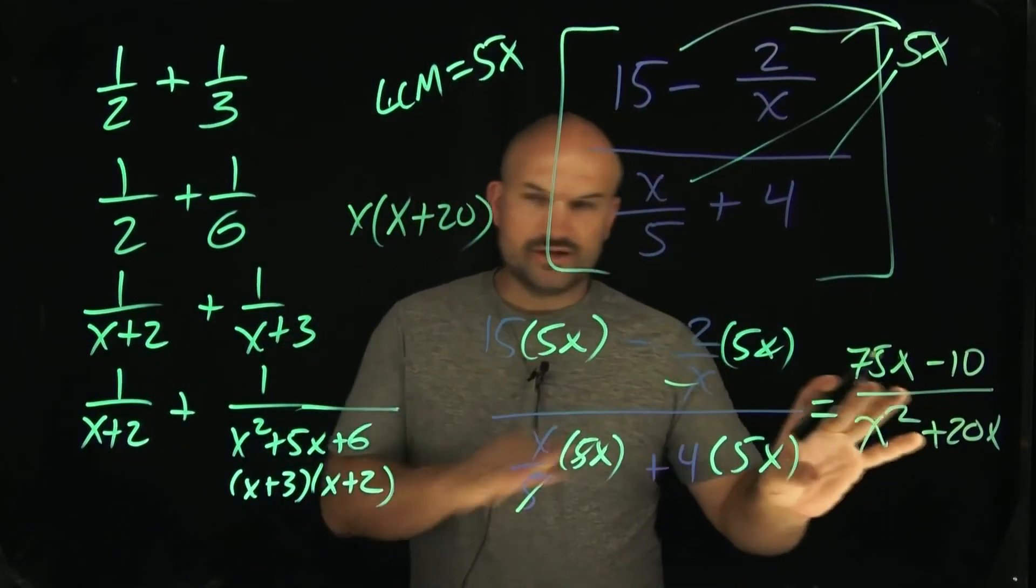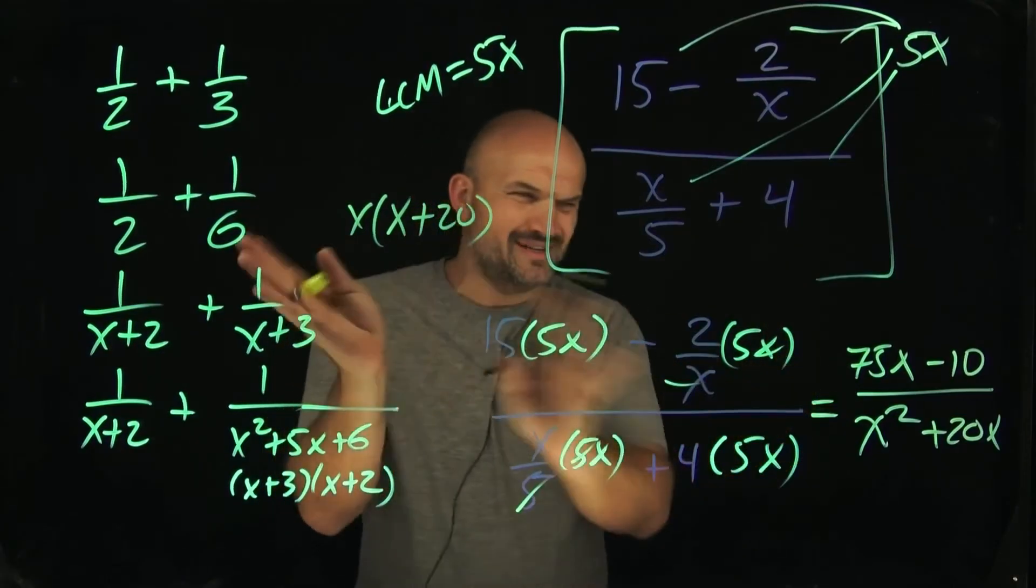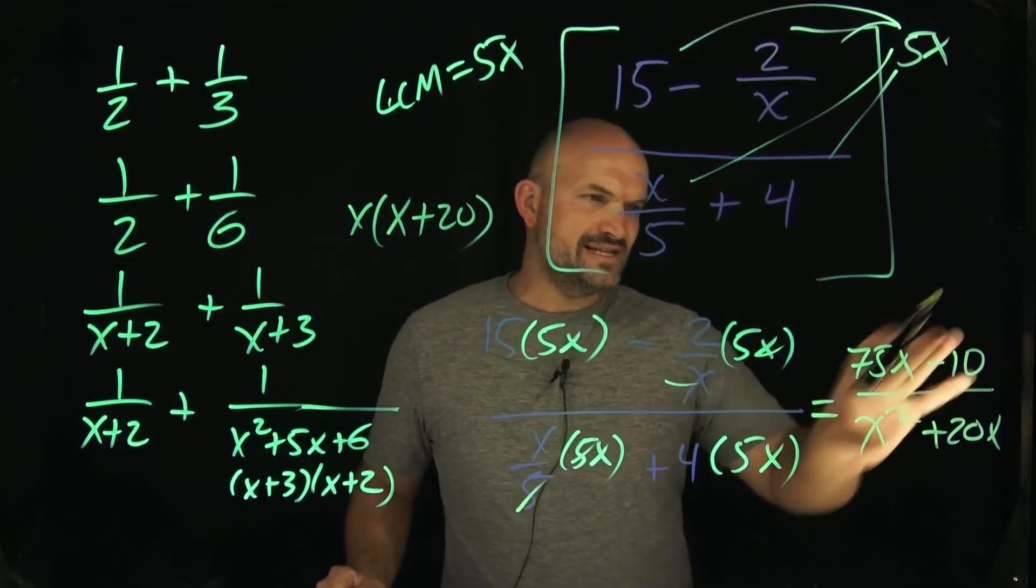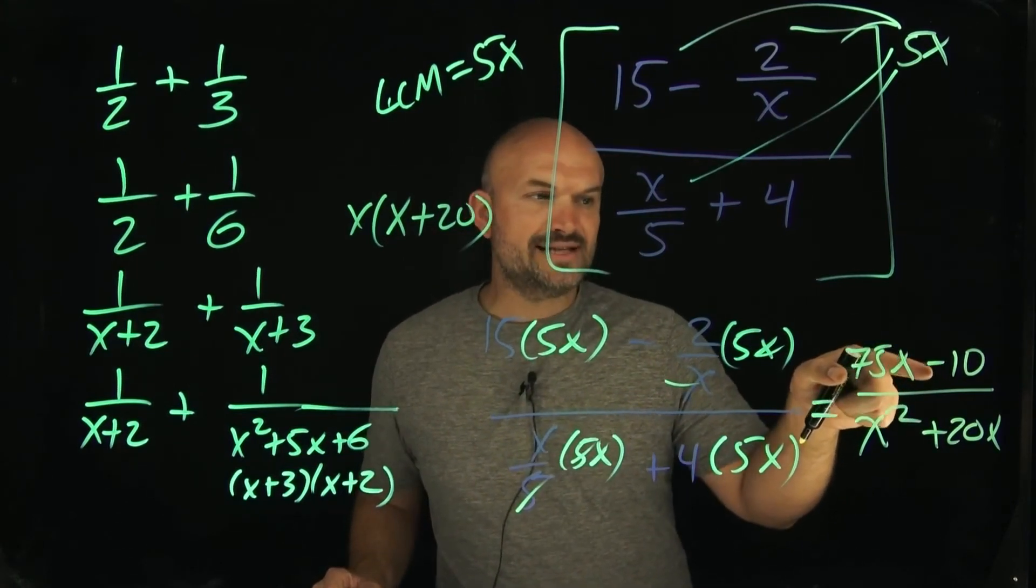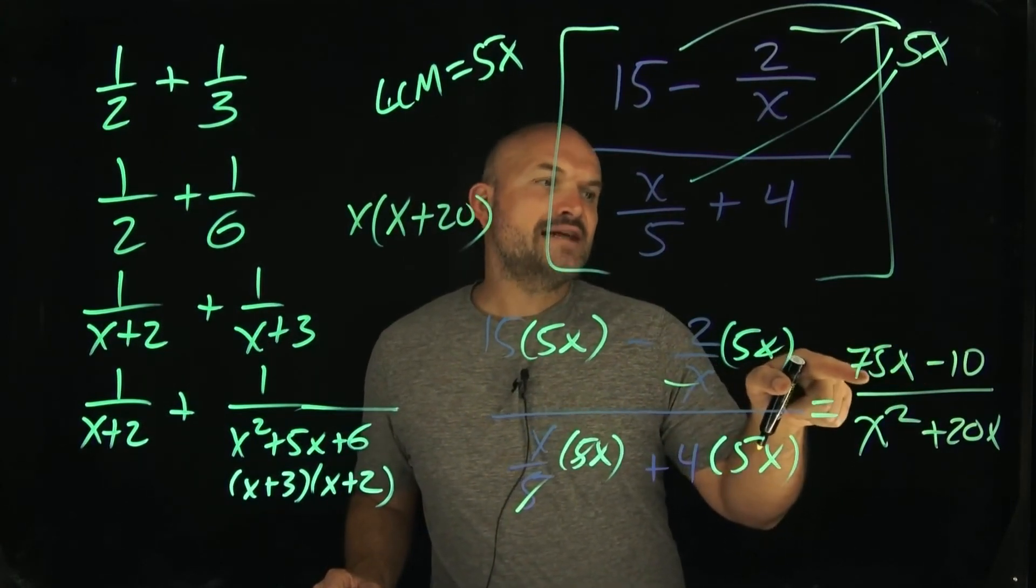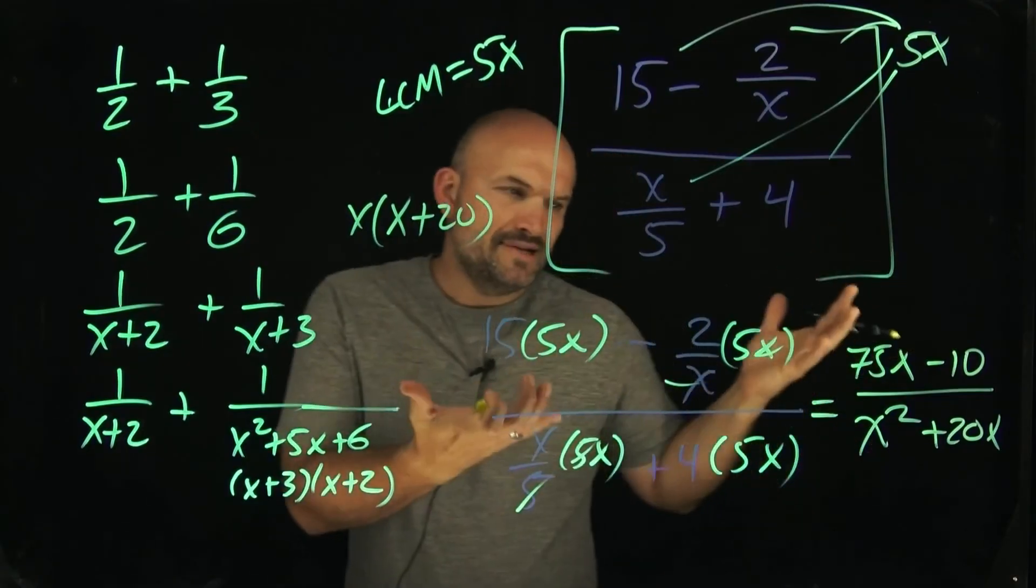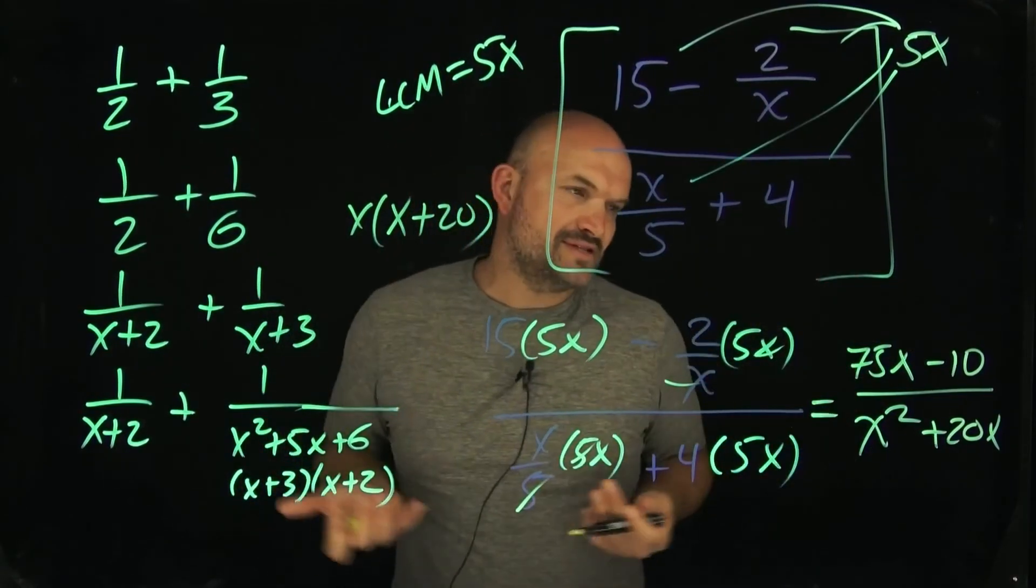So now we know that x, you could simplify the denominator if you wanted to, or you can just leave it as is. I'd probably leave it as is. Nothing's really going to be simplified. You could factor out a 5 in this case, factor out a 5 on the top and the bottom. But nothing else is going to be dividing out, so I would just leave it as it is.